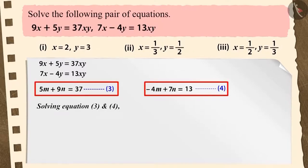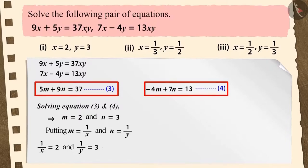Now on solving 3 and 4 by any method, we get m is equal to 2 and n is equal to 3. Now again keeping m is equal to 1/x and n is equal to 1/y, solving gives us x is equal to 1/2 and y is equal to 1/3. Therefore, option 3 is the correct answer.